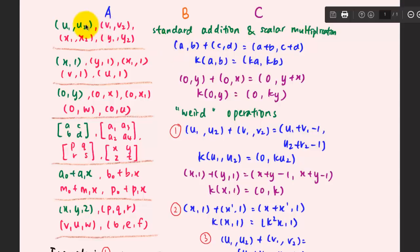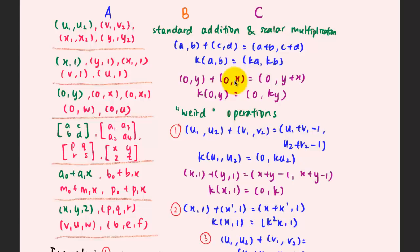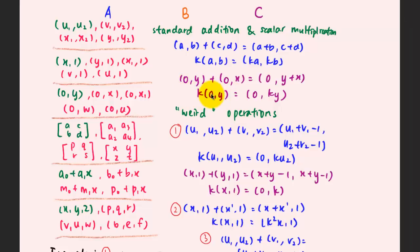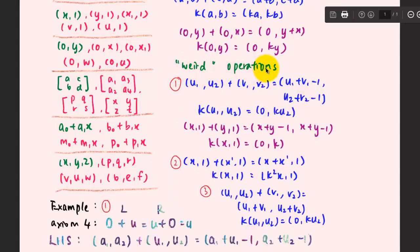This is not limited to standard or general matrix vectors. For example, taking the group 0 and y — another member could be 0 and x, 0 and x1, 0 and w, or 0 and u. The standard addition gives 0 plus 0 equals 0, and y plus x equals y plus x. And k multiplied with 0 and y gives 0 and ky — according to the standard addition and scalar multiplication.